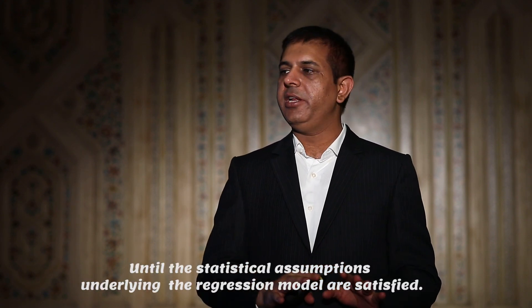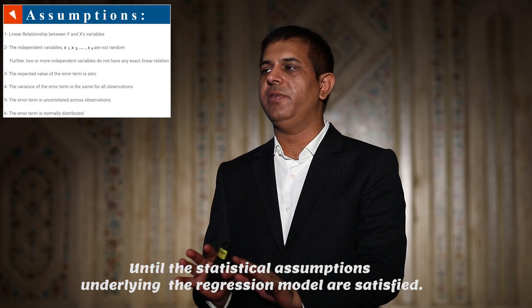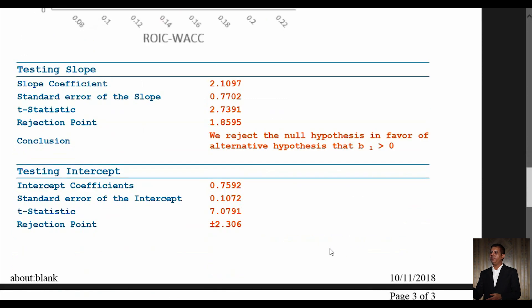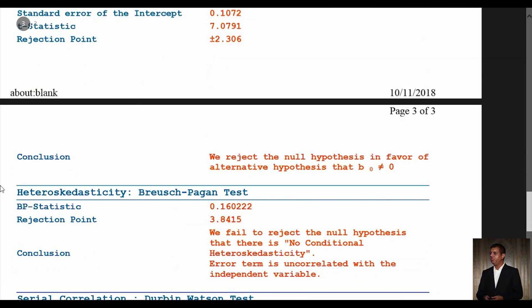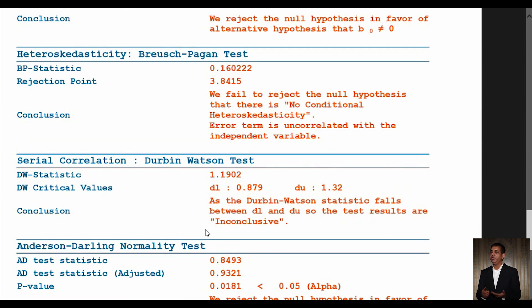Not until the statistical assumptions underlying the regression model are satisfied. Here is the result of each assumption. The assumption of heteroscedasticity is satisfied. The least-squares assumption of no serial correlation in the errors is inconclusive.